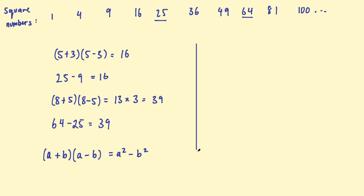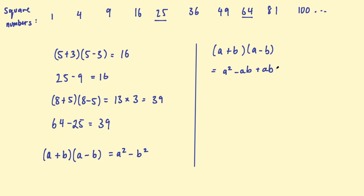We can prove this algebraically. If we take the two brackets (A + B) multiplied by (A − B) and expand them out — when we expand brackets, we multiply everything in the first bracket by everything in the second bracket — A times A is A squared, A times negative B is negative AB, positive B times positive A is positive AB, and positive B times negative B is negative B squared. Simplifying: negative AB plus AB equals zero, so these two middle terms cancel out and we are left with A squared take B squared.